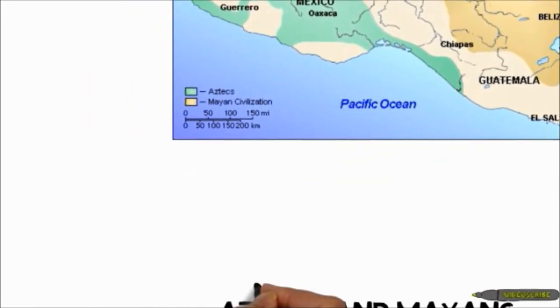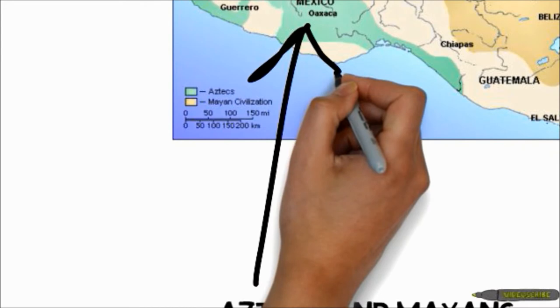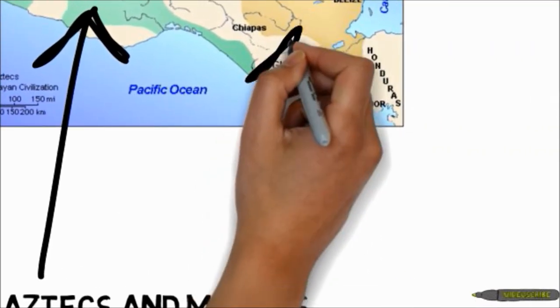The Aztecs were a group located in the central area of Mexico building the great civilizations on Tenochtitlan, present-day Mexico City, while the Mayans originated in the lower areas of Mexico.